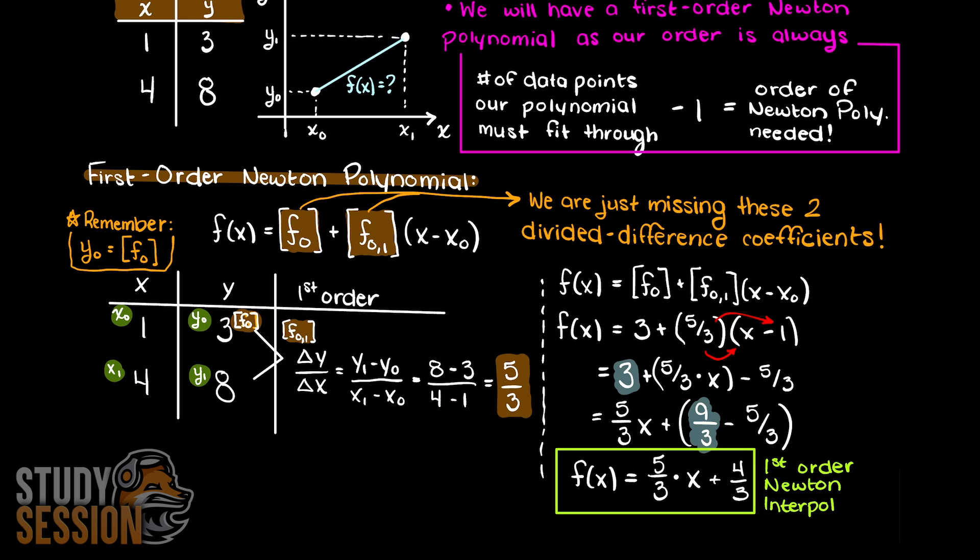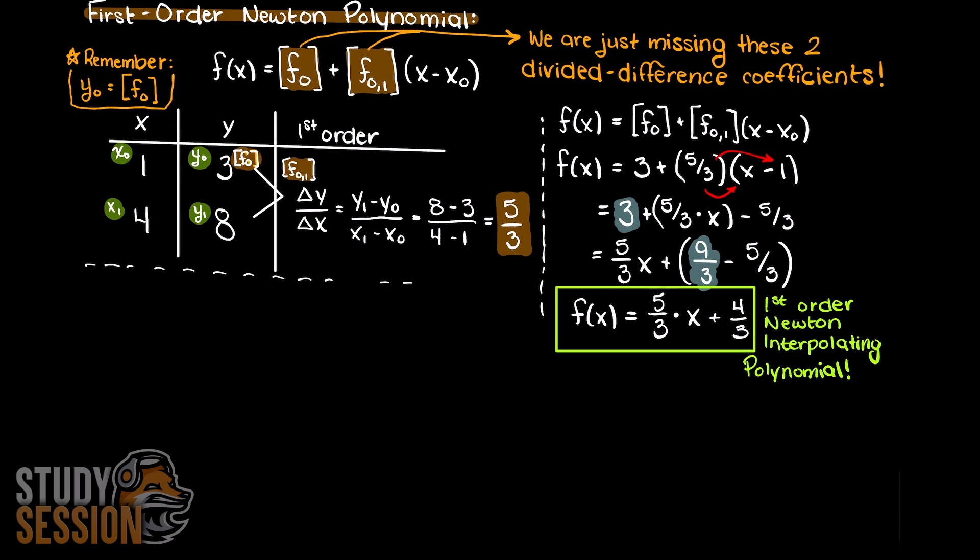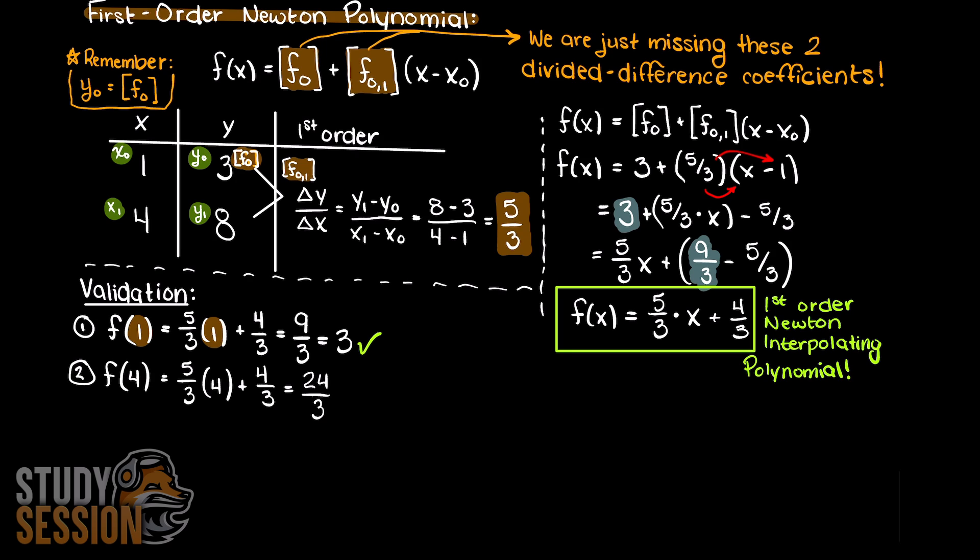You can now take a minute and try to validate your answer. We know that all of our x points must give our y points as interpolating polynomials must pass through all our supplied data points. And in this case we can see that we have done it correctly.